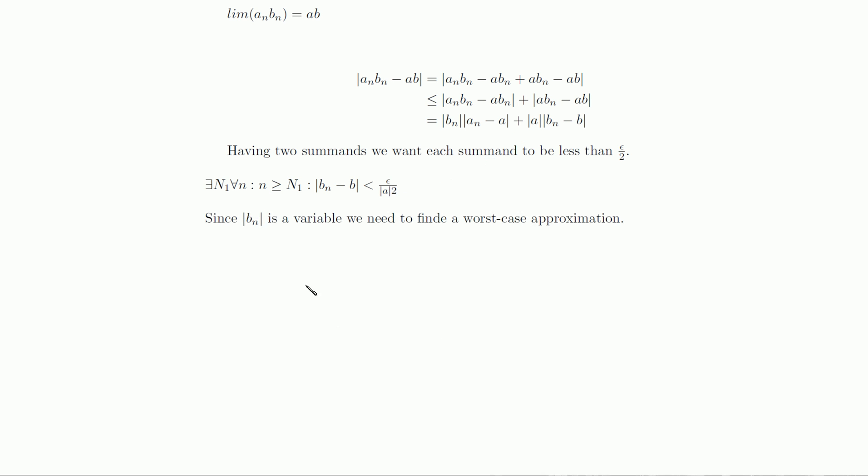The first summand is a bit more troublesome. Because bn is a variable, we have to find some worst case approximation such that our n2 definitely satisfies our demands. Fortunately, every convergent sequence is bounded. We let the bound of bn be capital B. This capital B right here.